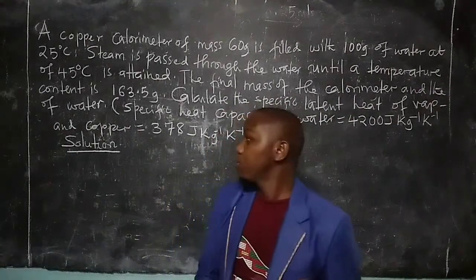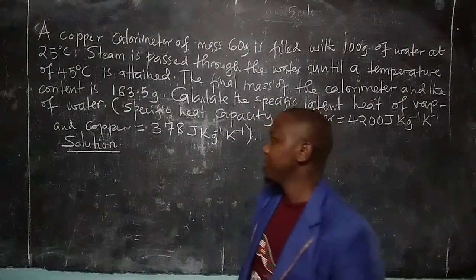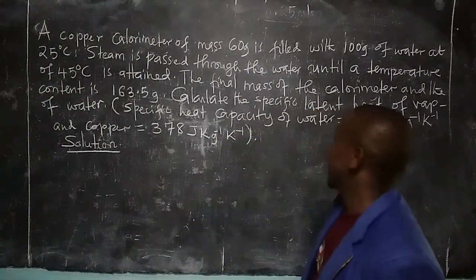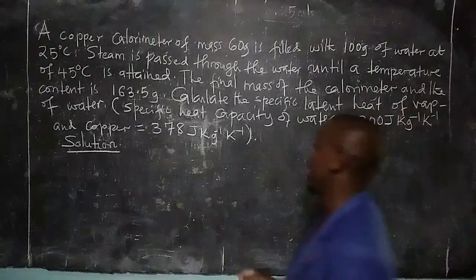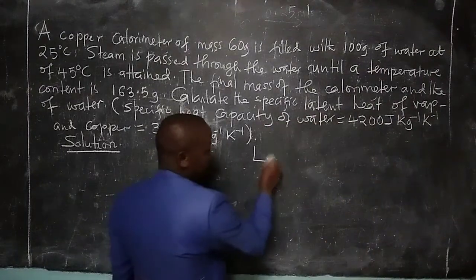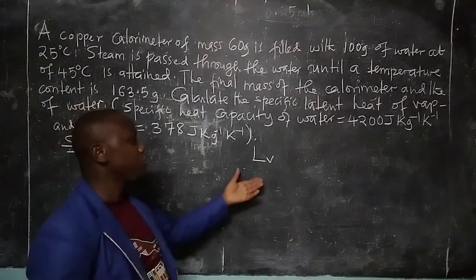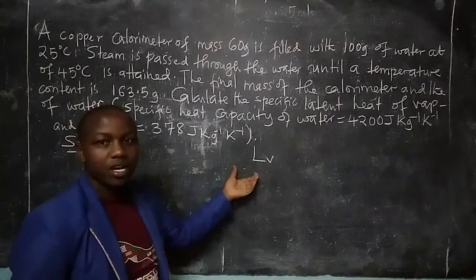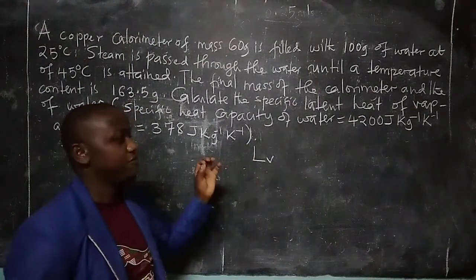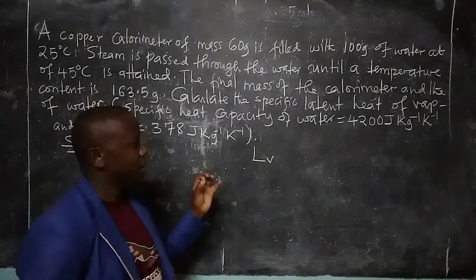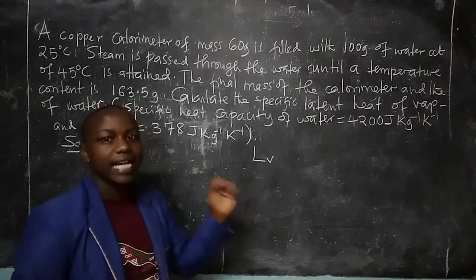I want to bring up a question on quantity of heat and I will be teaching how to calculate the latent heat of vaporization of water. It should be known that latent heat of vaporization is the amount of heat required to convert a unit mass from liquid to gaseous state at a constant temperature.